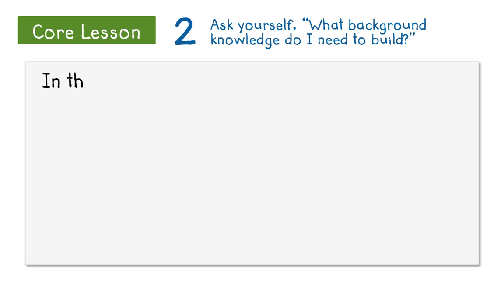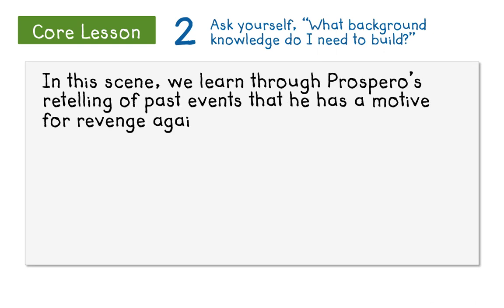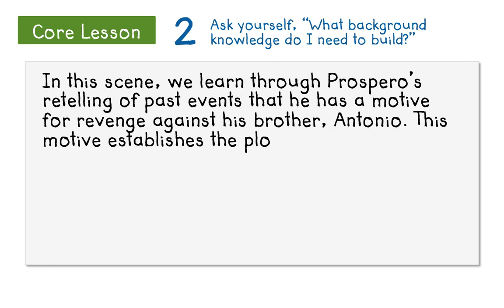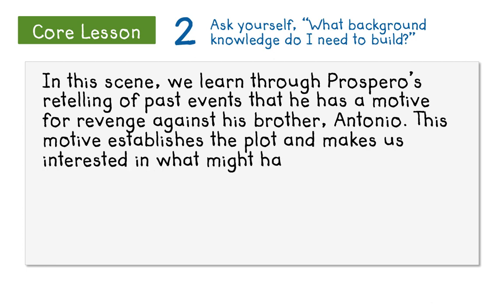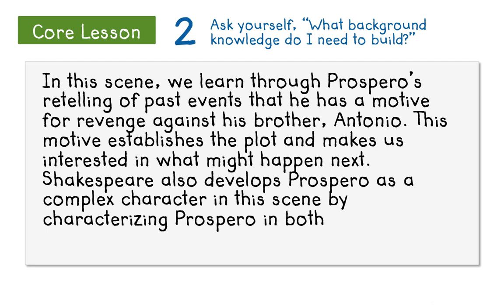Here's an example of what I could write: "In this scene we learn why Prospero creates the storm we saw in scene one, and through his retelling of past events we learn that he has a motive for revenge against his brother Antonio. Shakespeare uses Prospero's retelling of past events to establish the plot, as Shakespeare wants us to be interested in discovering whether Prospero gets his revenge. Shakespeare also develops Prospero as a complex character in this scene by characterizing him in both a positive and negative way."